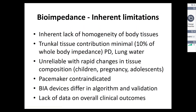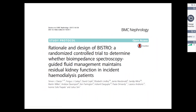Bioimpedance has its limitations. It assumes the body is a cylindrical model on which the algorithm is based. It doesn't measure fluid content of the truncal tissue, and therefore pulmonary edema or fluid in the pulmonary tissue can be missed. It's unreliable when there are rapid changes in tissue composition — pregnancy is a classical example. You cannot use it in patients who have pacemaker devices. There is also a lack of data on overall clinical outcomes in large studies.